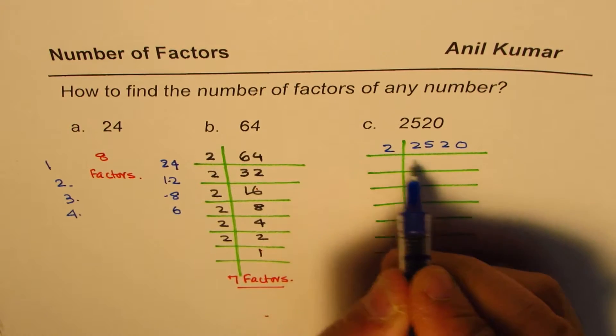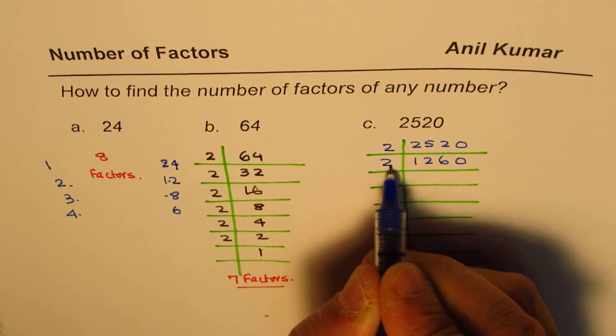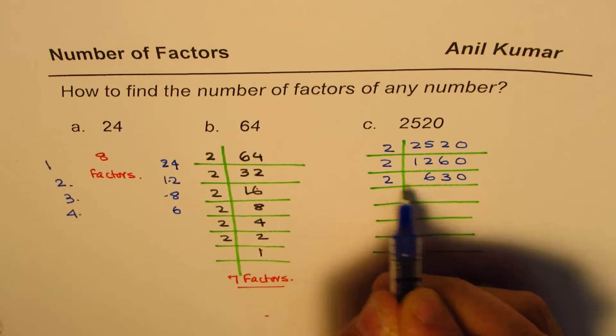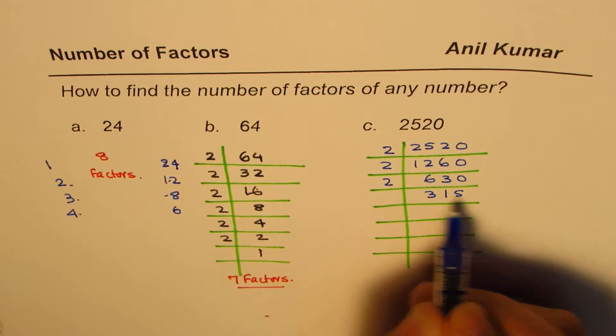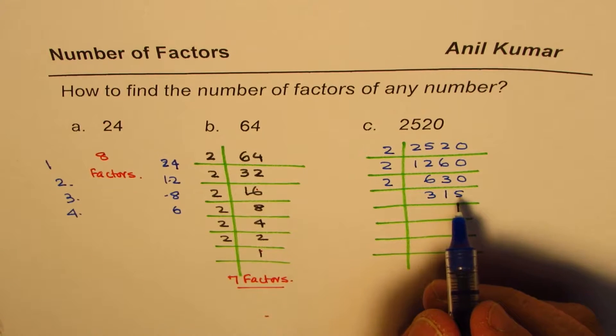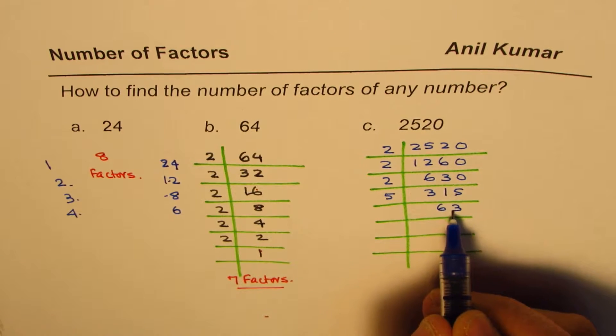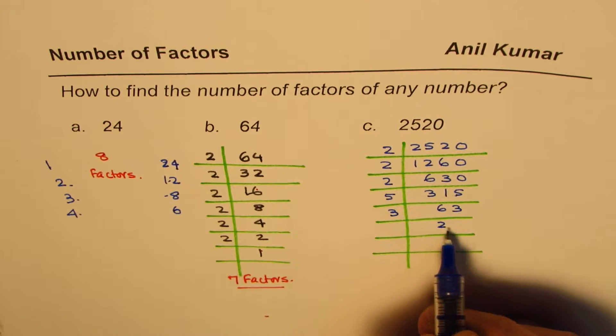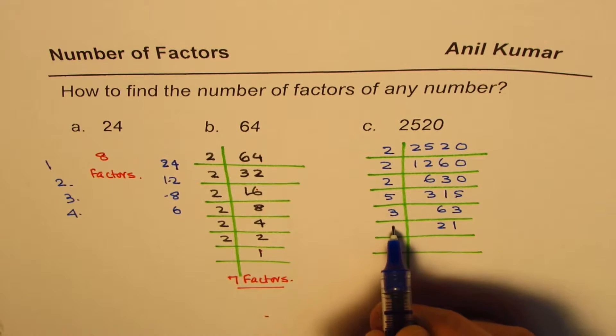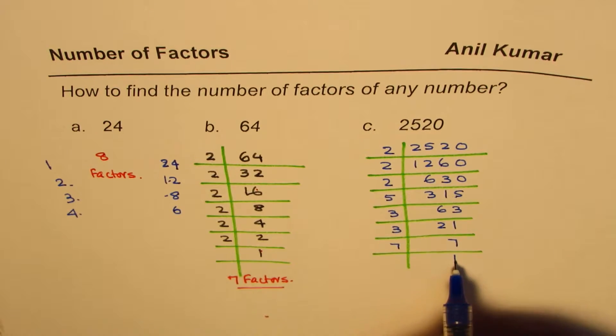So let's again divide by 2, which is 1260. Then again by 2, 630. Let's just do half of it, 3 and 15. And then, well, this time, 2 is not going to work, but 5 can work. So we'll do 5, 5 times 6 is 30 and 3 and 63 means 3 will work. So we have 21 and then again 3 will work, which is 7 and then let me write 7 and 1.